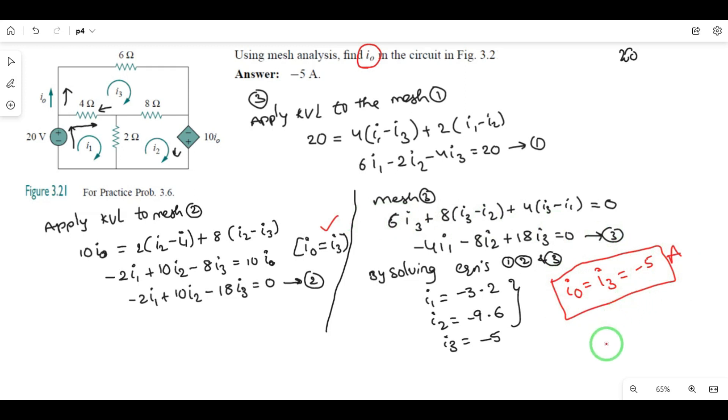So this is the second example for a dependent voltage source in a circuit using mesh analysis. Thank you guys, thank you very much. See you in the next class.